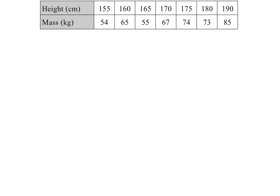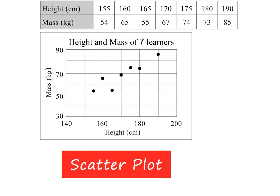This table shows the height and mass of seven learners. We can show this information on a graph called a scatter plot. And because we have two variables, namely height and mass, we call this bivariate data.